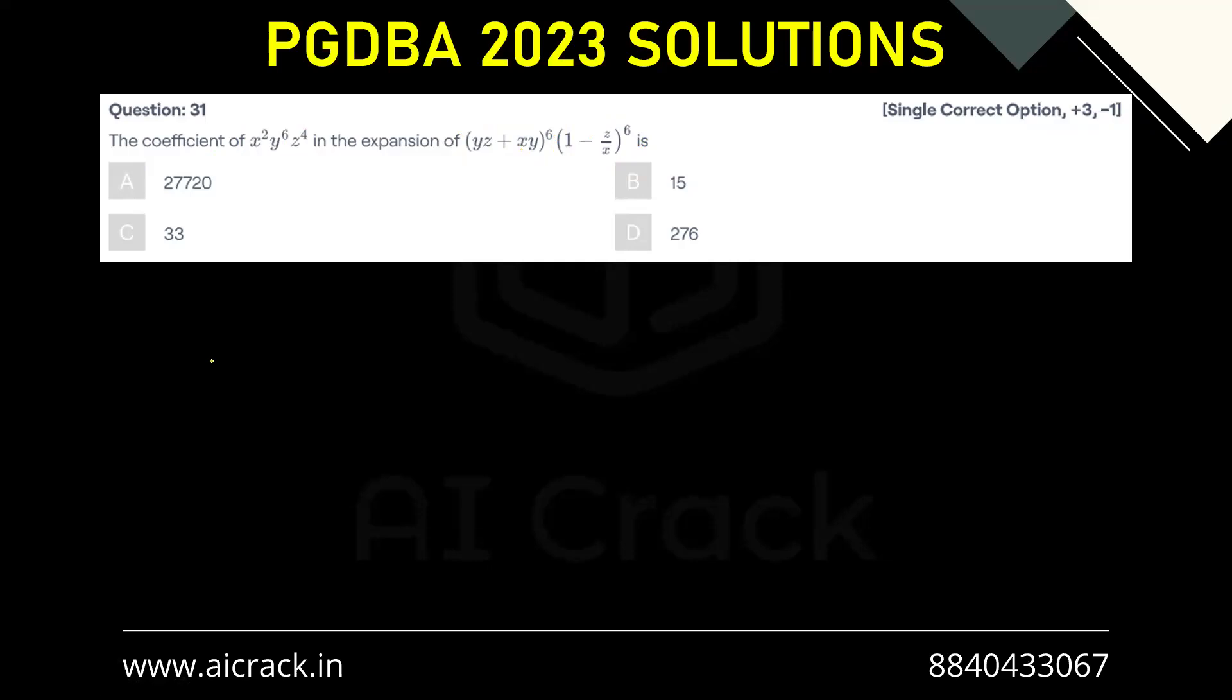So let's do that. We have (yz + xy) multiplied by (1 - z/x) whole raised to power 6. Now this gives us (yz - yz·z/x + xy - xy·z/x)⁶.